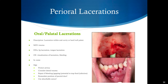Oral and palatal lacerations happen with significant trauma — there's a laceration either to the hard palate or around through the gums. These are picked up on direct visualization. Make sure the airway is stable and consider associated dental trauma by examining all the teeth. Repair if there's any bleeding, gapping, or potential for food entrapment with eating. Keep in mind the position of the parotid ducts bilaterally. These require absorbable sutures only for repair.